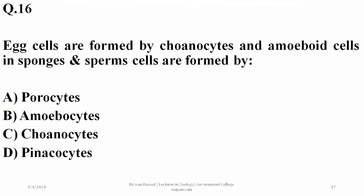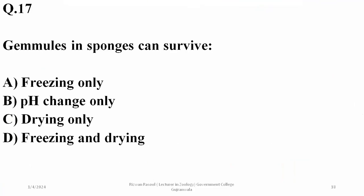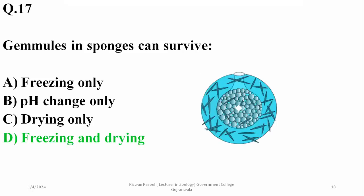Egg cells are formed by choanocytes and amoeboid cells in sponges, but sperm cells are actually modified choanocytes — so the right option is C. Question 17: gemmules in sponges can survive freezing as well as drying, so the right option is D.